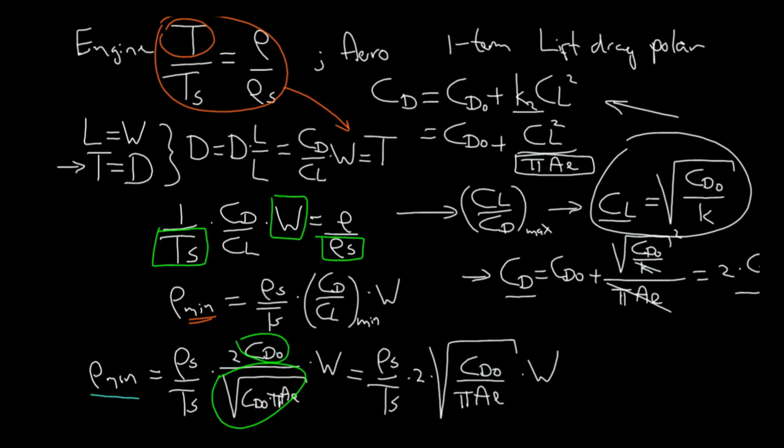So, what does this mean? Actually, we want this aspect ratio to be quite large. What we also want is we would like this weight to be quite low in order to reach high altitude. And we also like this CD0 to be small. Finally, we would like to have an engine which is able to deliver a high amount of thrust at high altitude.